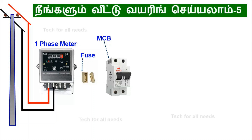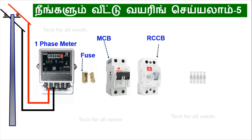The main MCB has input and output sides. The RCCP — its current rating has a minimum limit. If the RCCP minimum rating is 30mA for house wiring, please change it accordingly.